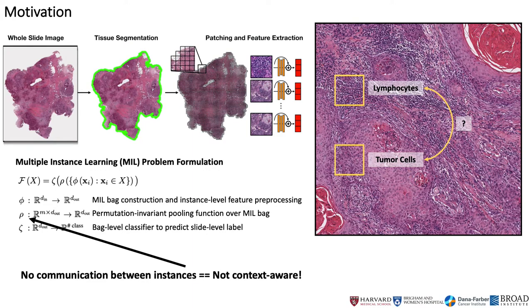Cancer outcome prediction is a much more difficult task that entails capturing important contextual and hierarchical information in the tumor microenvironment. For example, the interaction of tumor cells and lymphocytes that may elucidate tumor-infiltrating lymphocytes, which has known prognostic significance in immunotherapy. Such features are difficult to capture in conventional MIL approaches that only represent whole slide images via global pooling over permutation invariant bags.